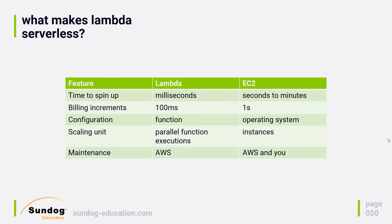One difference is the time to spin up. On Lambda, you can create a new execution of your function in milliseconds, and if it already has an environment running your function, it can execute almost instantly. Whatever time your function takes to execute factors in, but it's going to spin up and run right away. Whereas with EC2, you can provision a server pretty quickly, but then you need to boot up the server's operating system before you can do any work, so it can take minutes to spin up a new instance. But with Lambda, it's always sitting there waiting for you.